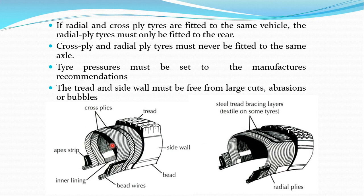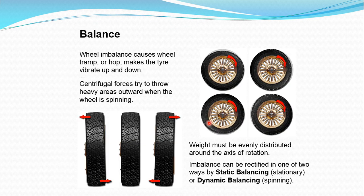In a bias ply tire, numerous plies are used at high-angle cords of 35 to 40 degrees. In a radial tire, low-angle cords of 15 to 20 degrees are used. The carcass is shown here, with numerous belts over the carcass, and the tread on top. Below the tread is the crown. This covers the tire terminology.